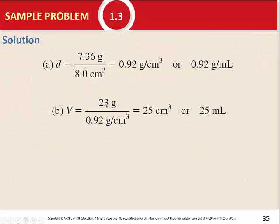That gives us 25. Looking at the units: grams on top, grams per centimeter cubed on the bottom. The grams cancel. Dividing by a fraction is the same as multiplying by its reciprocal, so centimeters cubed moves to the numerator. The answer is 25 cubic centimeters, or 25 milliliters. That's how to calculate density and volume using the same equation.